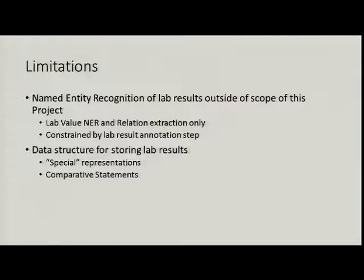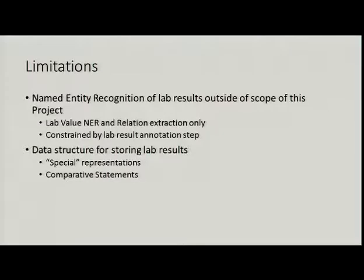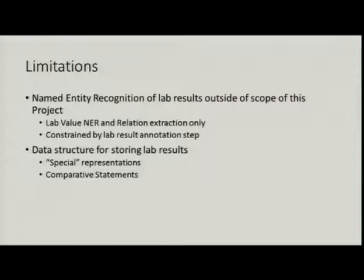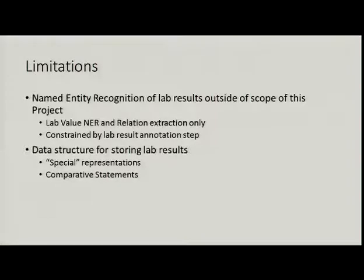A second major limitation concerns the data structure we use for storing lab results — we only identify numeric values. Some lab tests have special representations; for instance, blood pressure has two numeric values, and it cannot be well represented in our data structure since there's usually no written unit. Beyond that, comparative statements are not supported. For instance, if someone says 'hematocrit level of less than 35%', our extractor would associate 35% with hematocrit but would not capture the 'less than' qualifier, simply recording hematocrit as 35%.